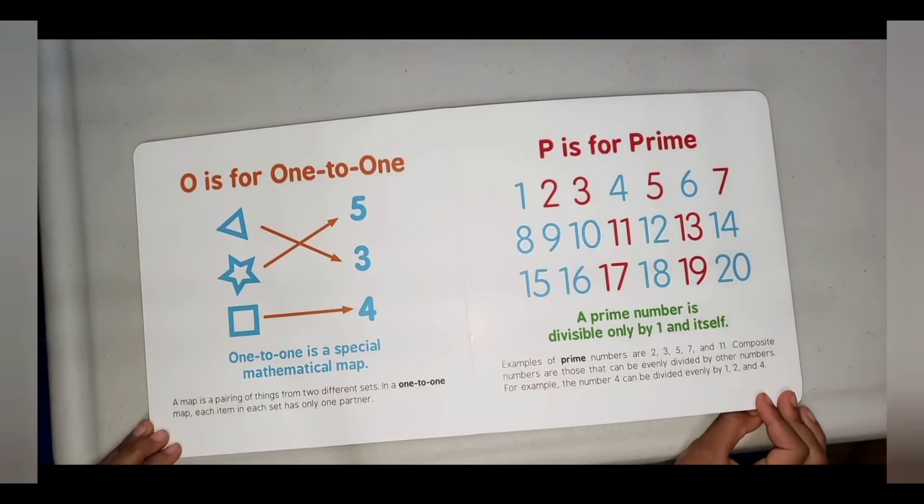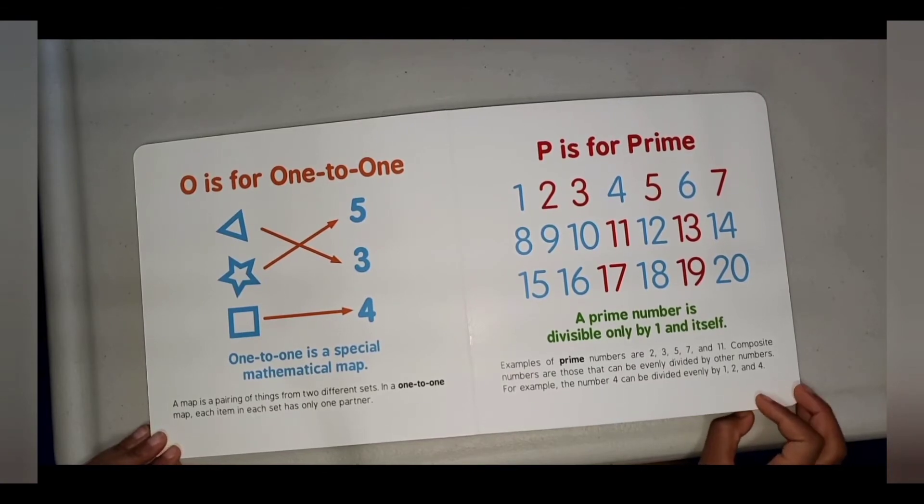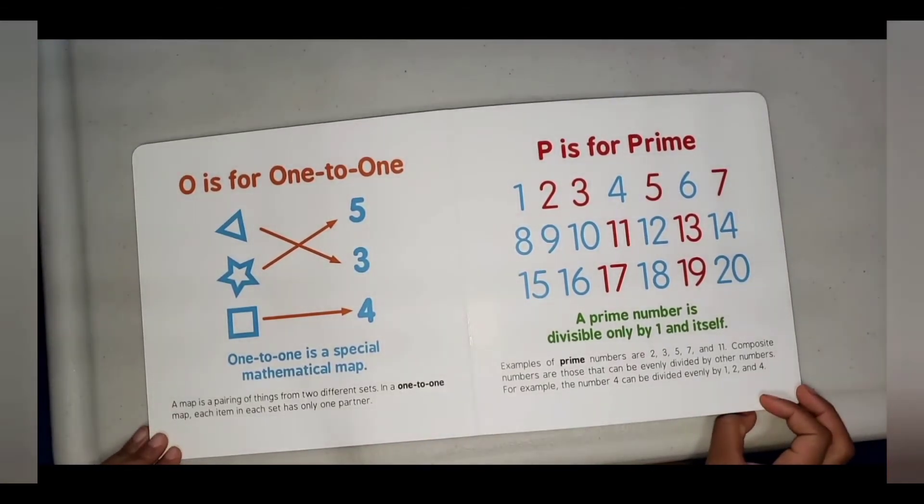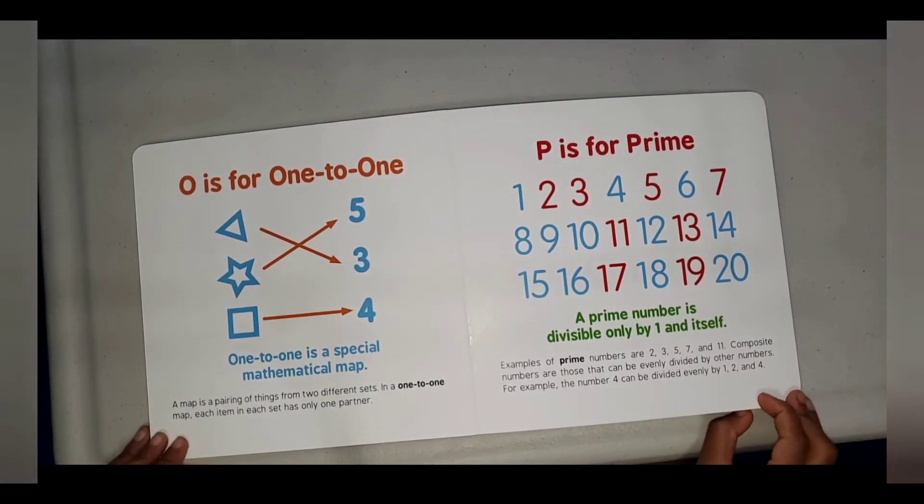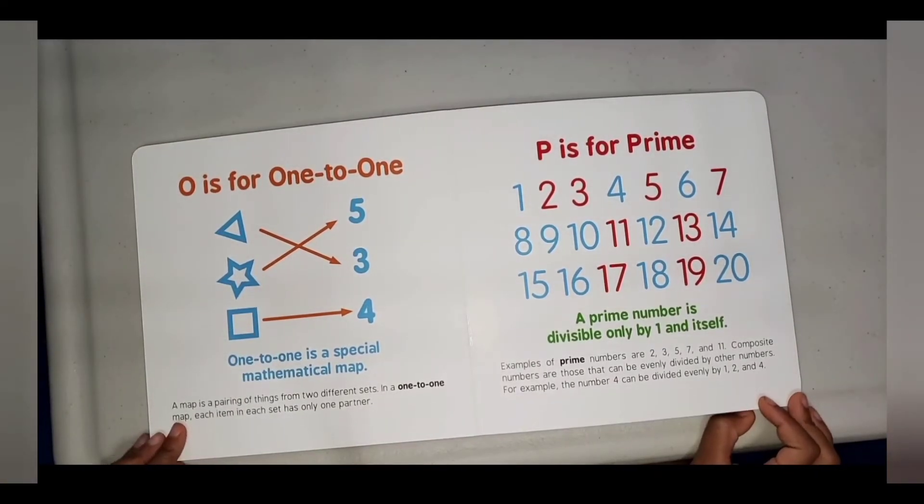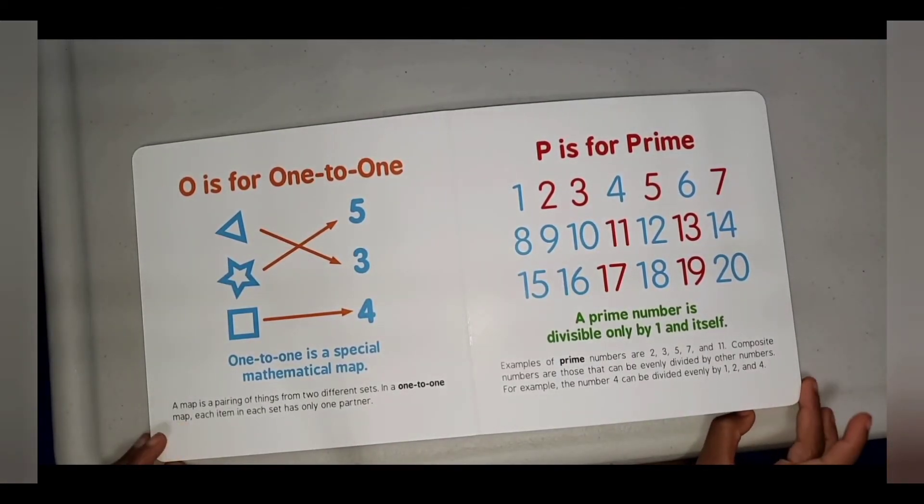P is for Prime. A prime number is divisible only by one and itself. Examples of prime numbers are 2, 3, 5, 7, and 11. Composite numbers are those that can be evenly divided by other numbers. For example, the number 4 can be divided evenly by 1, 2, and 4.